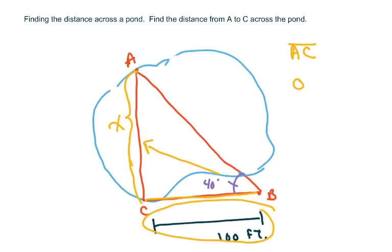So when we have opposite over adjacent to this angle, that's your tangent function. Okay, so we're going to write tan of 40 degrees equals opposite, you can just write x if you want, over 100 feet.